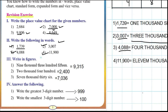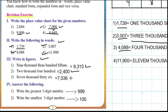Third main: write in figures. They have given numbers in words and we have to write them as numbers. Nine thousand three hundred and fifteen is 9315. Two thousand four hundred is 2400. Seven thousand and thirty-six is 7036.